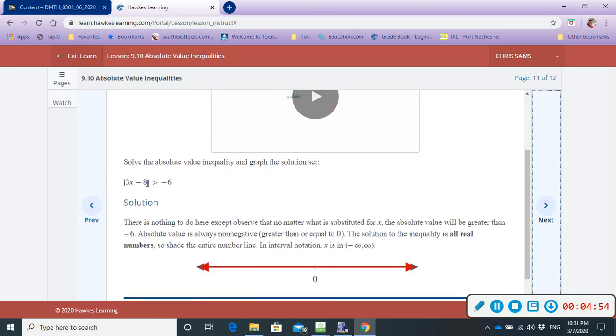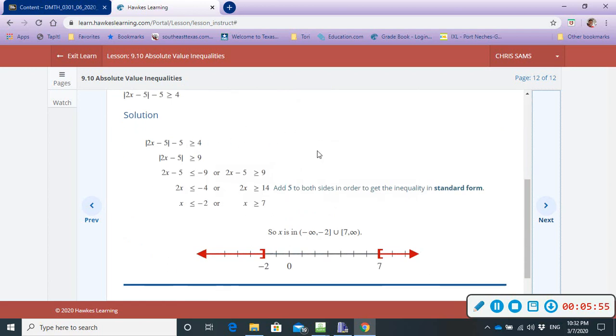When you do absolute value of some expression is greater than a negative number, this time, we can get a solution, but you don't have to do any work. There's nothing to do here, except observe that no matter what we plug in for x, it's going to be greater than a negative number. Because absolute value of anything, it's going to make it positive. Everything is going to be bigger than negative 6. It's either going to be zero, which is still bigger than negative 6, or some other number. And so, the solution for this expression is going to be all real numbers. The whole number line. So from negative infinity to positive infinity in interval notation. So absolute value greater than a negative is going to be all real numbers. Because everything you plug in here is going to make it bigger than negative 6 when the absolute value changes it positive. So you've got to be mindful. There's two scenarios. One is less than it doesn't work and greater than it does.